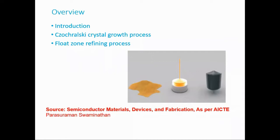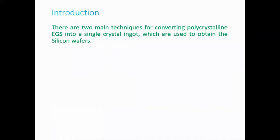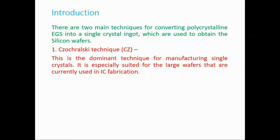In this class we will be discussing two different processes by which we can obtain a crystal of a particular orientation. The first process is called the CZ process, or Czochralski crystal growth process. The second is the float zone refining process. Both have their advantages and disadvantages. These are two main techniques for converting polycrystalline electronic grade silicon into a single crystal ingot used to obtain silicon wafers.